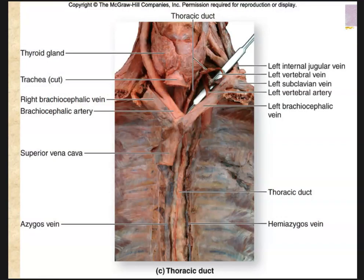This is a cadaver that's been cut up. You can see right here the SVC, and the heart should be right here but it's gone. In this picture we've taken out the heart, the aorta, and the IVC so we can see what's going on behind them. This is the thoracic duct — it goes up and around and then empties into the subclavian/jugular junction. On the right-hand side, it looks like we don't have the right duct shown.